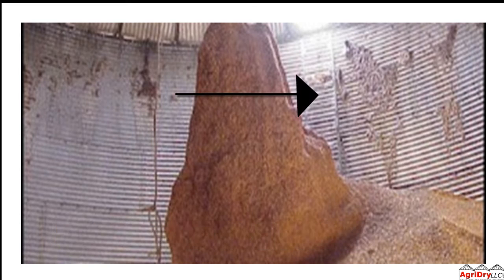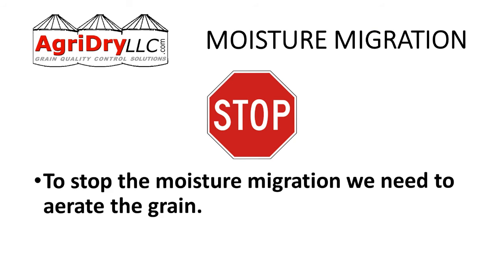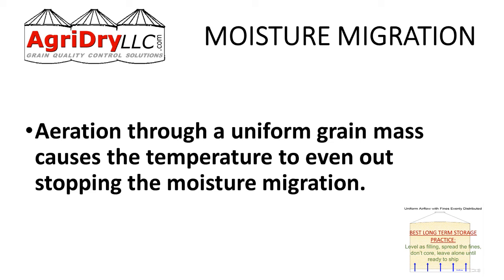You can also see condensation issues from the side of the bin, just like what we talked about. So how do we stop the moisture migration and deal with condensation? We have to aerate the grain mass and get it to a uniform temperature — because it's a function of moisture and temperature.